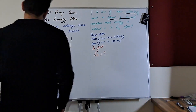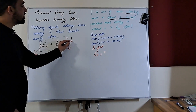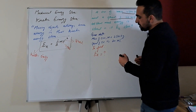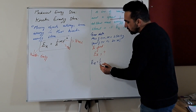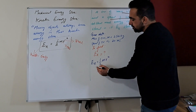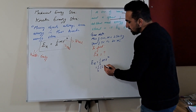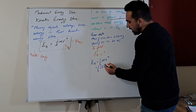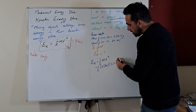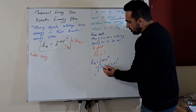The solution is: because this is kinetic energy, this is mass, and this is speed, we use this equation. Ek is equal to 1/2 M v squared. So: 1/2 multiplied by mass 2500 and speed 20, squared.